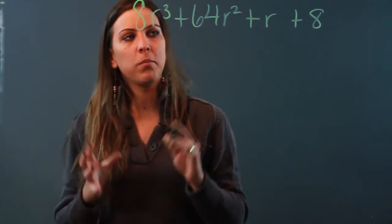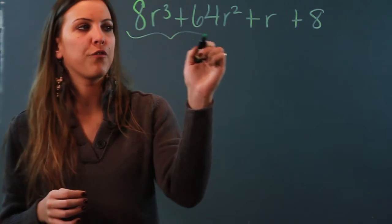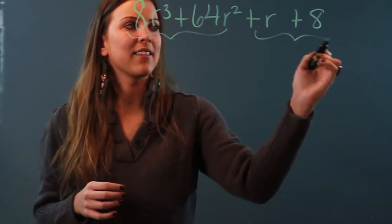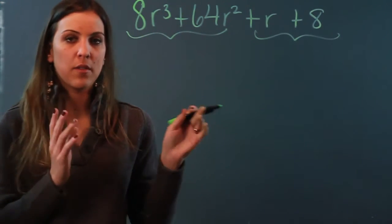So what I have to do is group this polynomial by looking at the first two terms and the last two terms and factoring each of them separately.